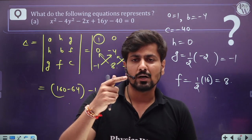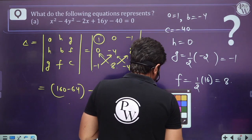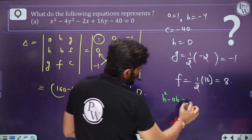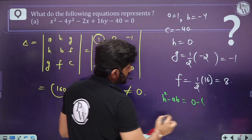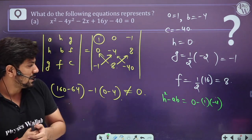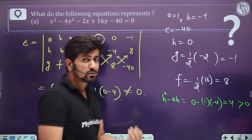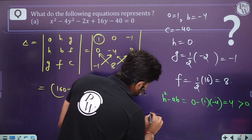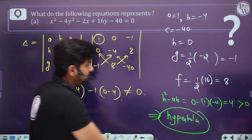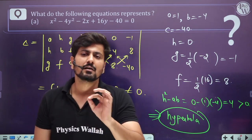Now find h² − ab: h = 0, a = 1, b = −4. So h² − ab = 0 − (1)(−4) = +4. Since h² − ab is positive (greater than 0), this equation represents a hyperbola.